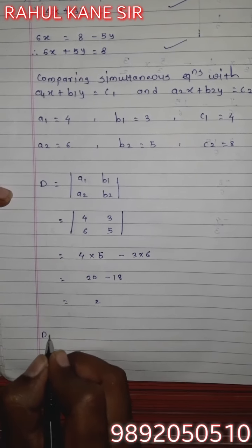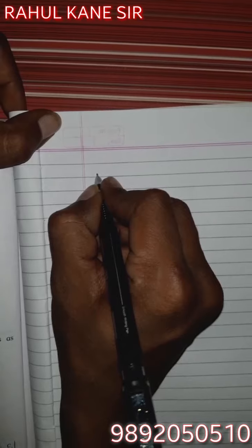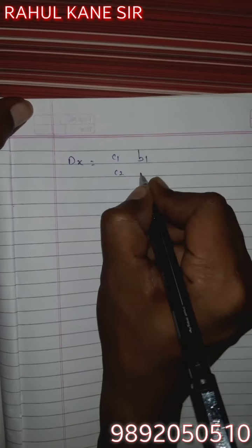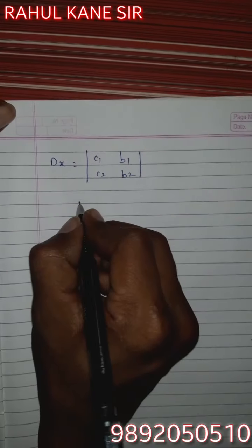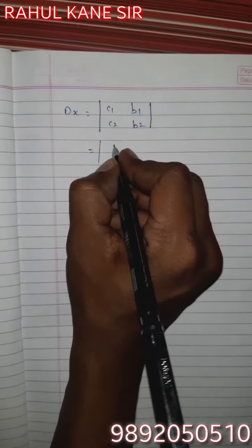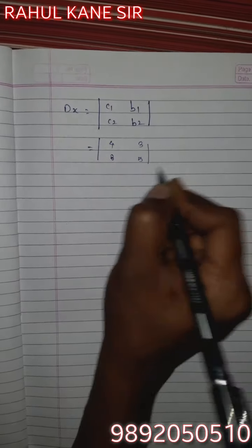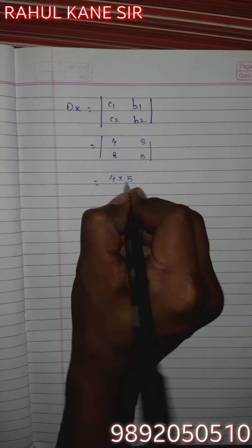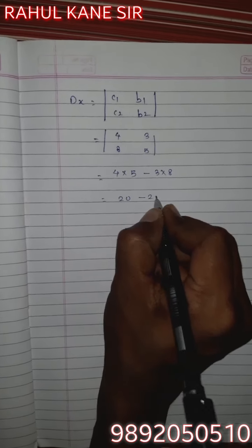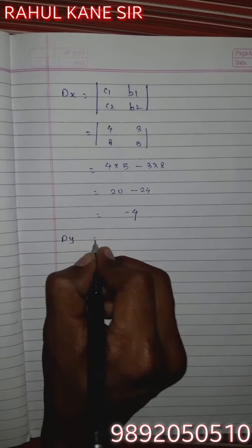Next, Dx equals |c1, c2, b1, b2| equals |4, 8, 3, 5|. By cross multiplication: 4×5 minus 3×8. Fours fives are 20, threes eights are 24. 20 minus 24 equals -4.